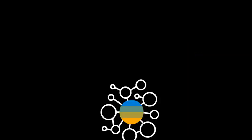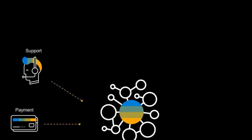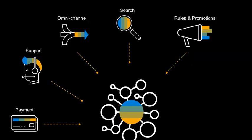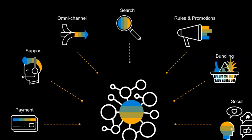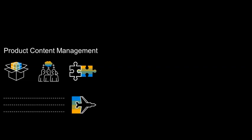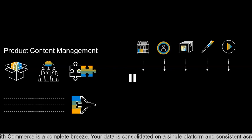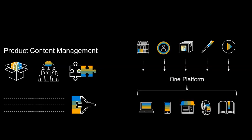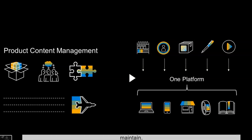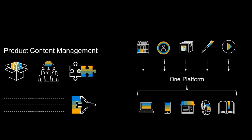Let's look at Commerce Cloud's most powerful features. It supports payment, omni-channel capabilities, high-performance search, rules and promotions — all manageable online. What makes it most special is content collaboration, integration capabilities, and handling large volumes of products, all on a single platform.